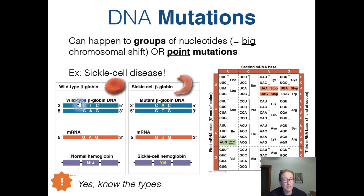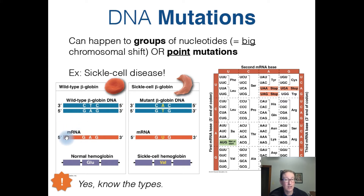If we look at the upper strand, originally we started with a sequence of CTC. In the mutant version, we've now gone to CAC — the A and T wound up being switched. This upper strand is the template strand, complementary to the messenger RNA transcribed to produce the beta globin protein. So in wild-type beta globin, the mRNA has the sequence GAG, whereas the mutant mRNA instead has the sequence GUG.